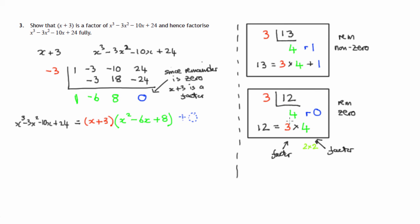Now that's in the same way as in this division, 3 into 12 goes 4, remainder 0. When the remainder was 0, we've established that 3 is a factor of 12. So in this case, we've established that x plus 3 is a factor of this polynomial.